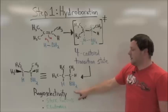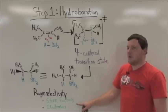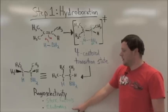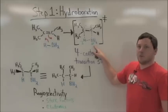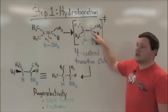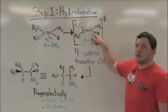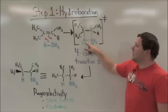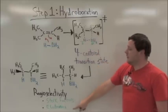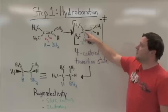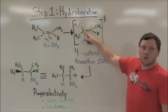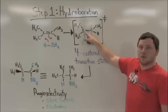This regioselectivity is based on two factors, sterics and electronics. Being the larger fragment in this process, boron is better accommodated by the less substituted carbon. And being partially negative for the electronics, this hydrogen is attracted to the partially positive, more substituted carbon atom.